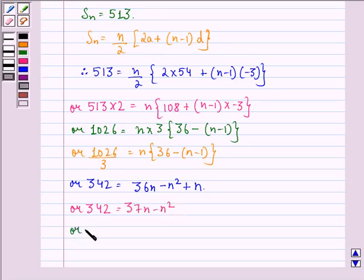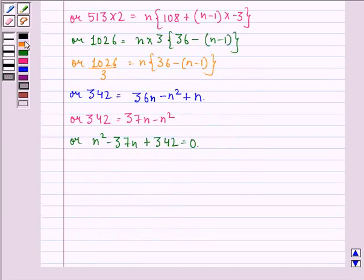Or N square minus 37N plus 342 equals 0. Now, factorizing this, we get N square minus 18N minus 19N plus 342 equals 0.